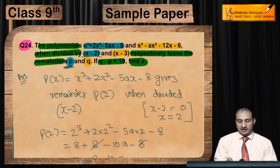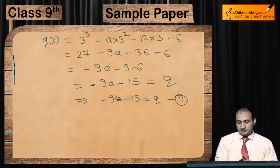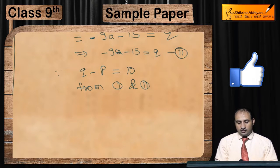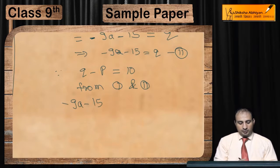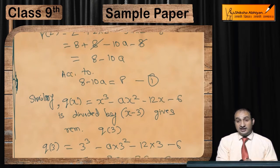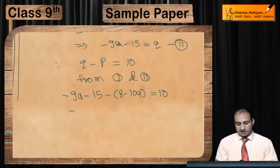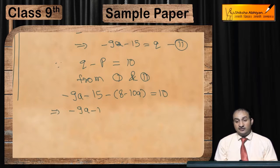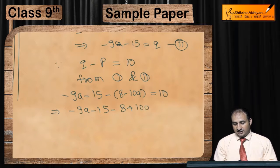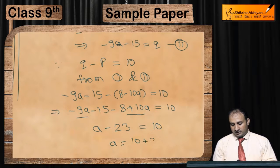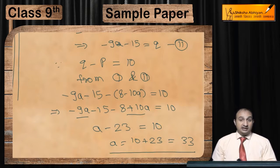Since q - p = 10, substituting from Equations 1 and 2: (-9a - 15) - (8 - 10a) = 10. This gives -9a - 15 - 8 + 10a = 10, so a - 23 = 10, therefore a = 33.